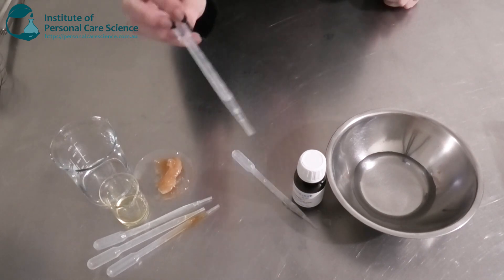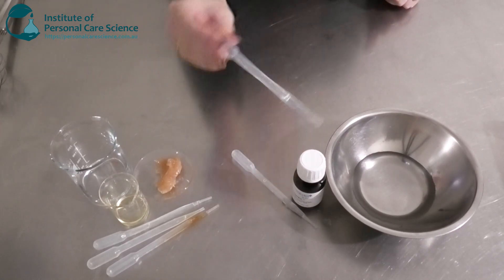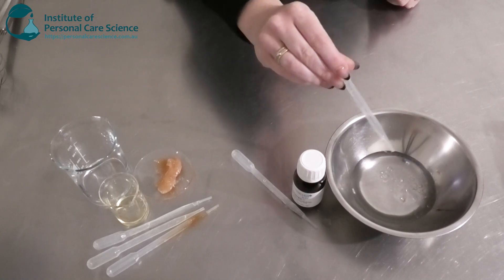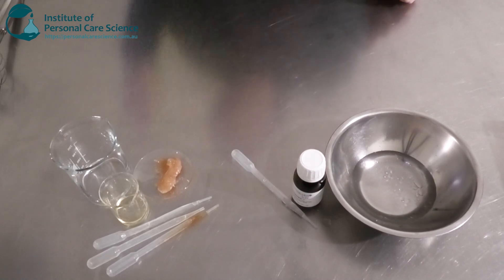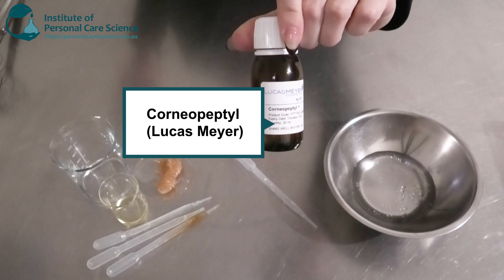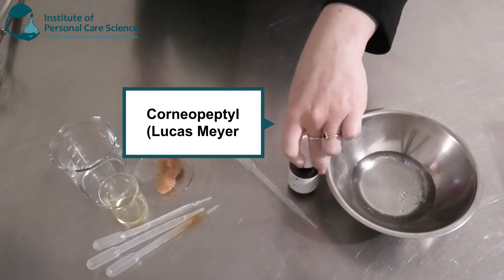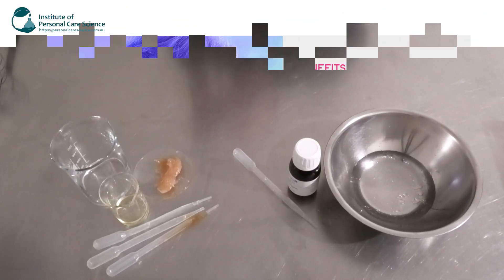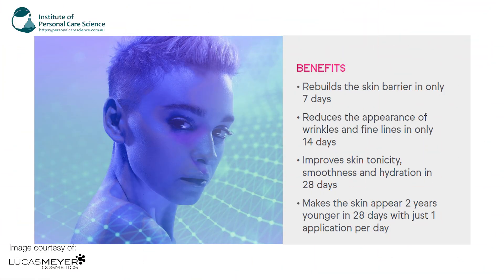I'm going to be adding my preservative into this phase too. I'm just using Euxyl PE 9010 by Schulke. Now the star ingredient is the Corneo Peptide by Lucas Meyer. So this is our star active here. So this is really good for rebuilding the skin barrier in just seven days. So pretty quick results. It reduces the appearance of wrinkles and fine lines in only 14 days. It improves the skin's smoothness and hydration in just 28 days.